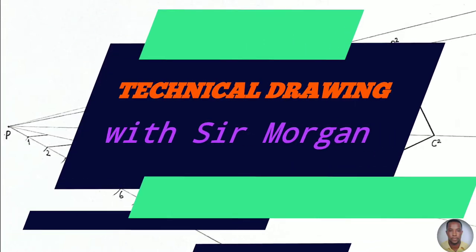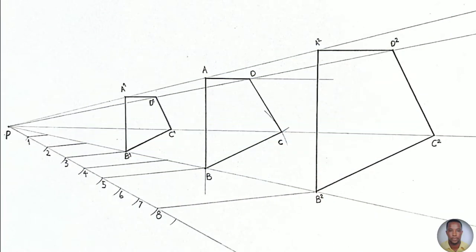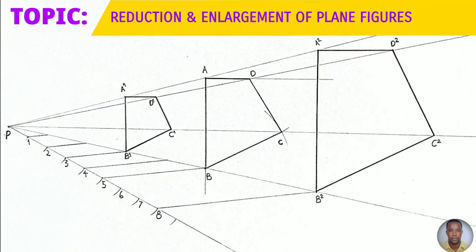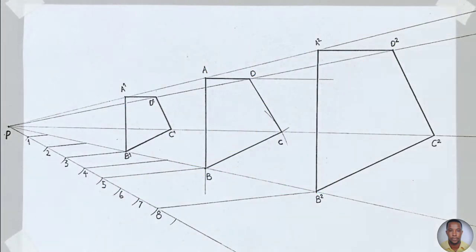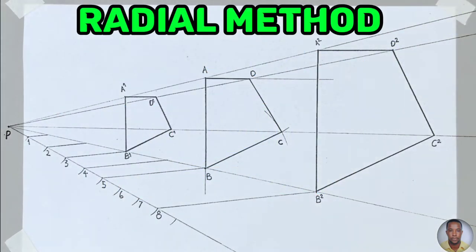Greetings everyone, Sir Morgan here from the technical department. From the topic reduction and enlargement of plane figures, I'll be showing you how to reduce and enlarge a quadrilateral. This method is called the radial method.